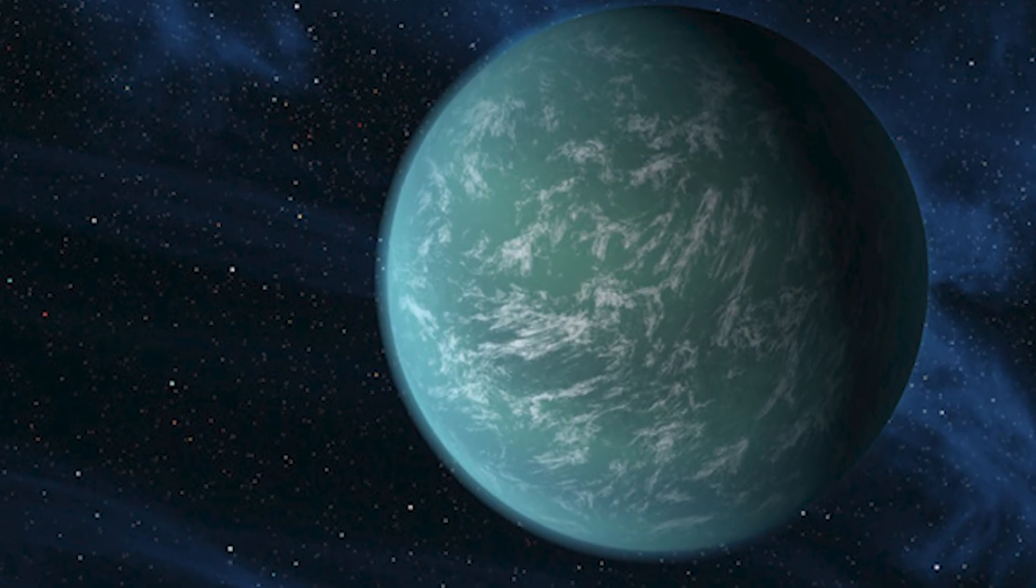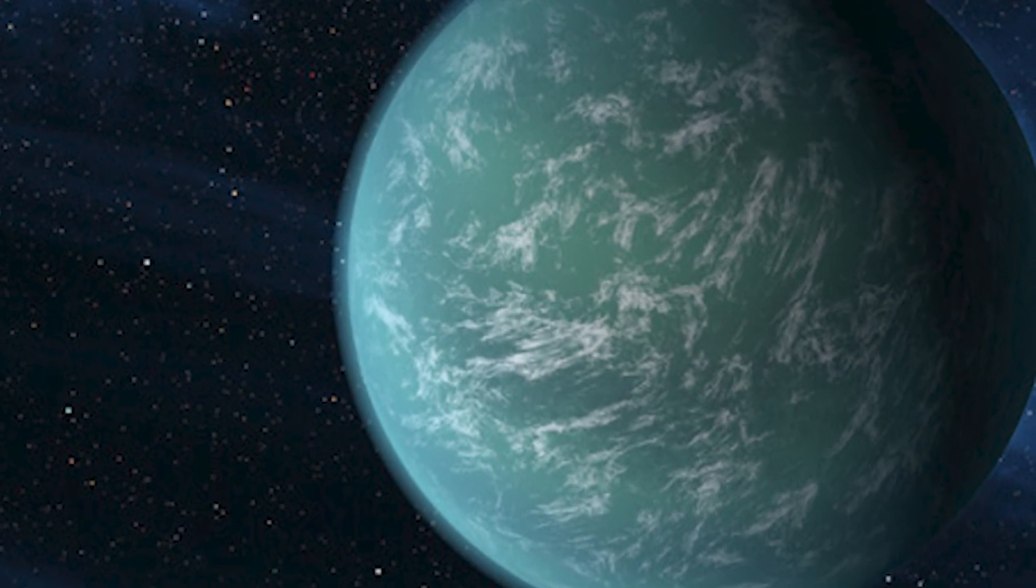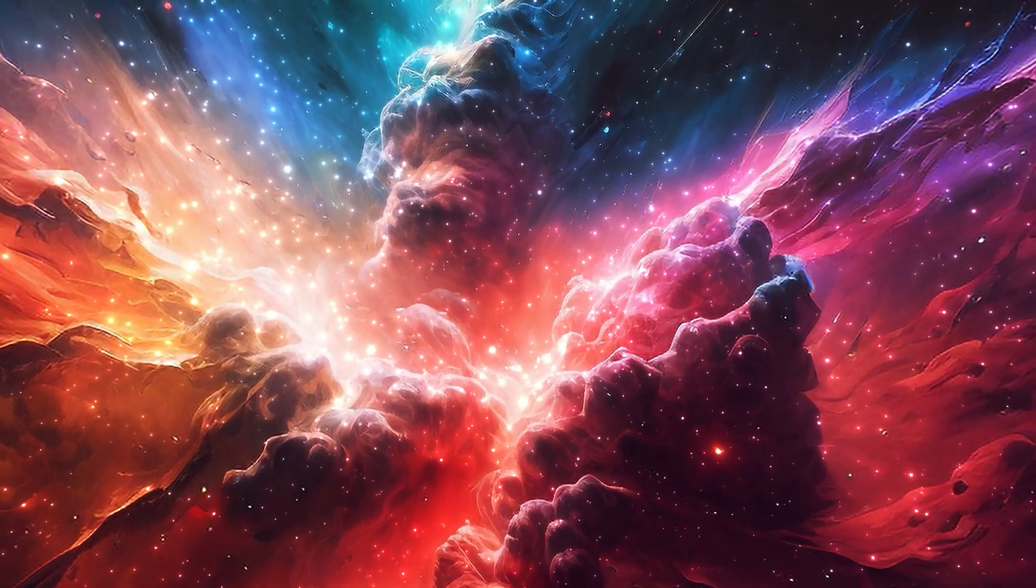Lastly, the Kepler-22b planet, located about 600 light-years from Earth, deserves mention. While it's larger than Earth, it orbits within the habitable zone of its star, Kepler-22. The conditions on this planet, particularly the possibility of it having a vast and deep ocean, make it an exciting candidate for the Hycean category.